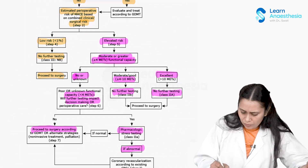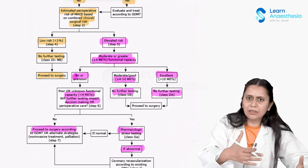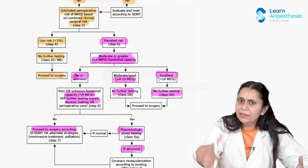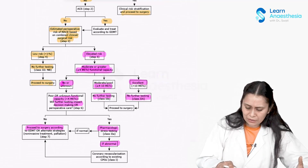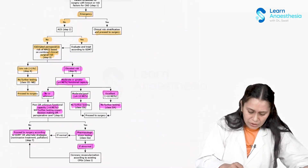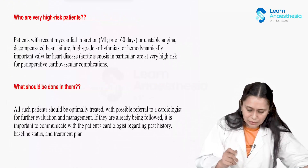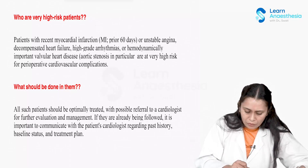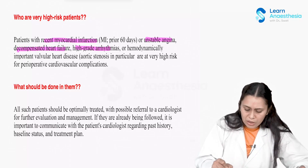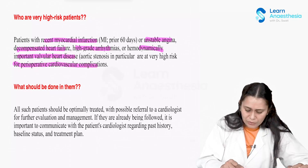If pharmacological stress testing is abnormal, then goal-directed medical therapy like angioplasty can be done prior to surgery. First, we have to improve the patient's functional status and then take the patient for surgery. Examiners may ask about very high risk patients: those with recent MI, unstable angina, decompensated heart failure, high-grade arrhythmia, or hemodynamically important valvular heart disease like aortic stenosis are particularly at very high risk for perioperative cardiovascular complications.